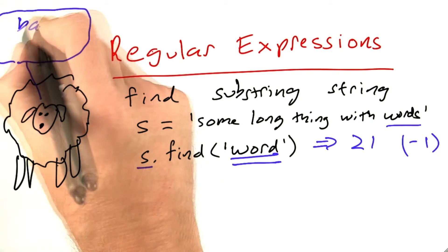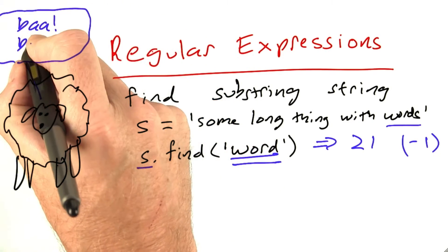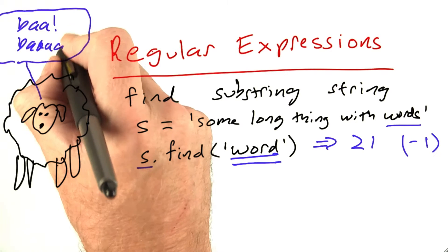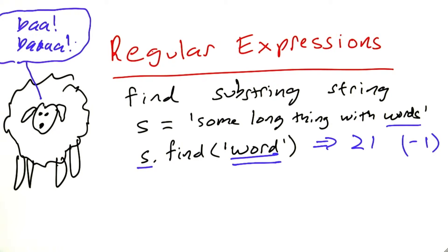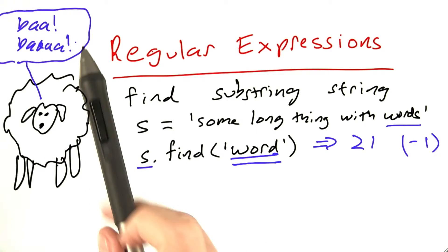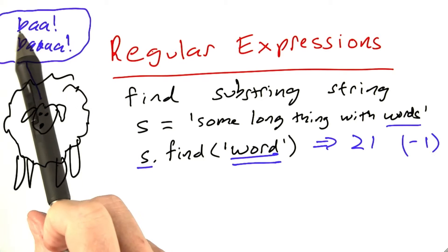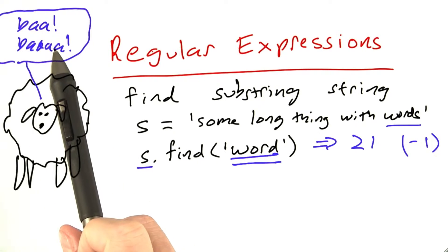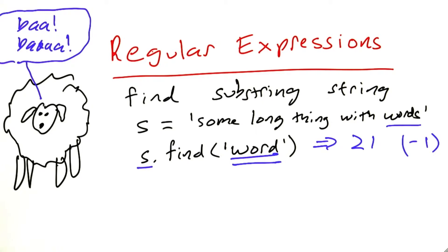Well, a sheep can say baa or baaa and so on. Let's say we're interested in the family of words that have a b and an a and then any number of more a's and then an exclamation point. We can't specify that as a single word for find or even as a finite set of words because there's an infinite set of words.